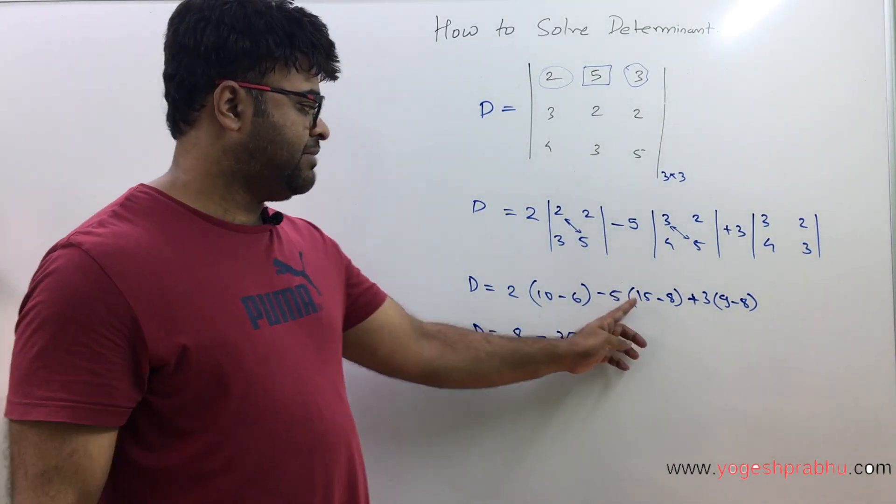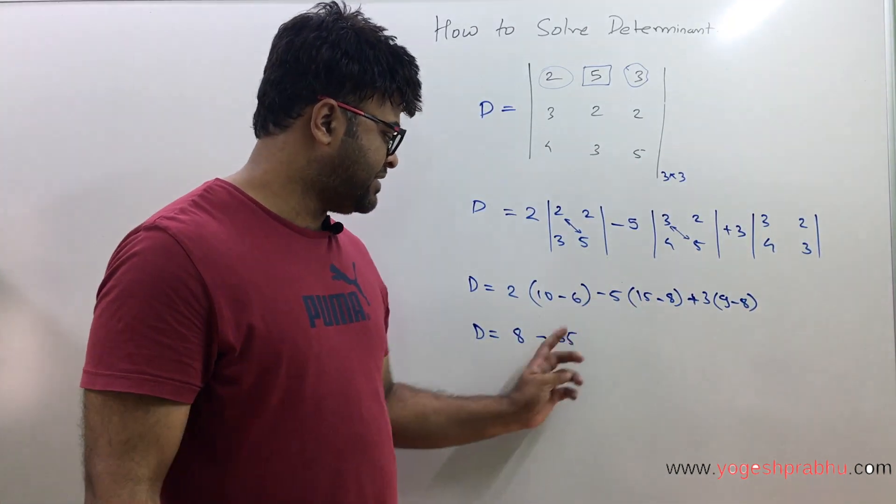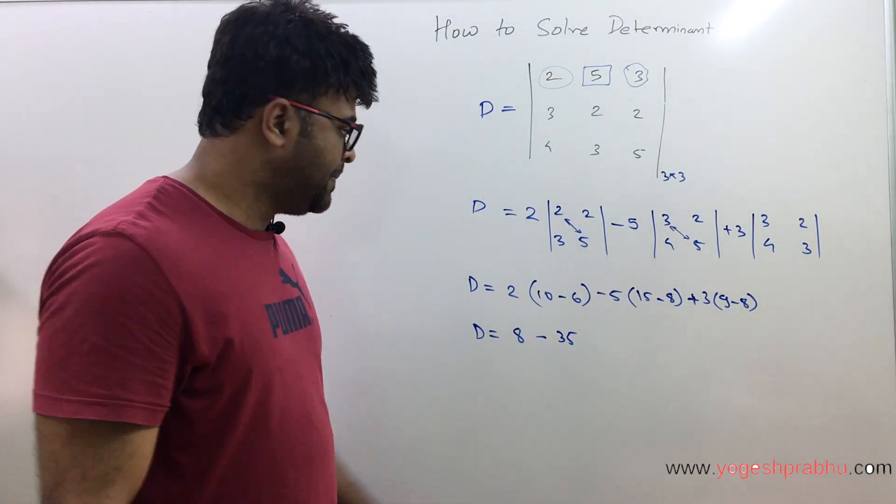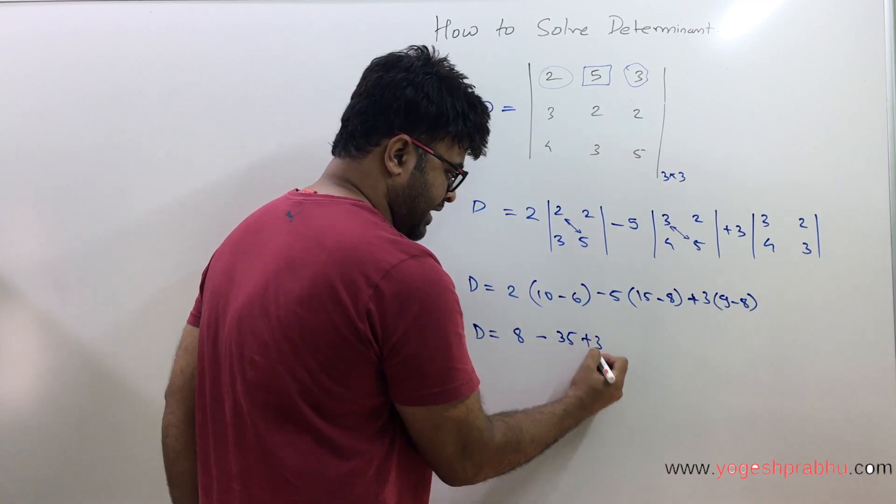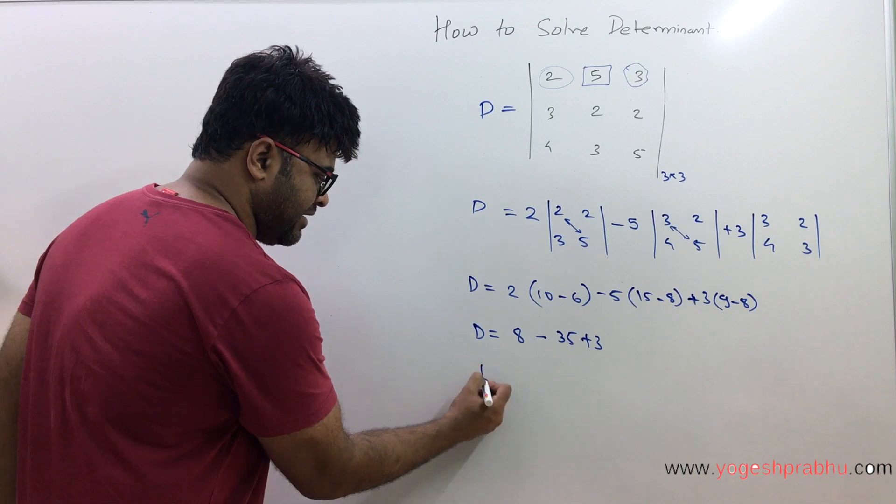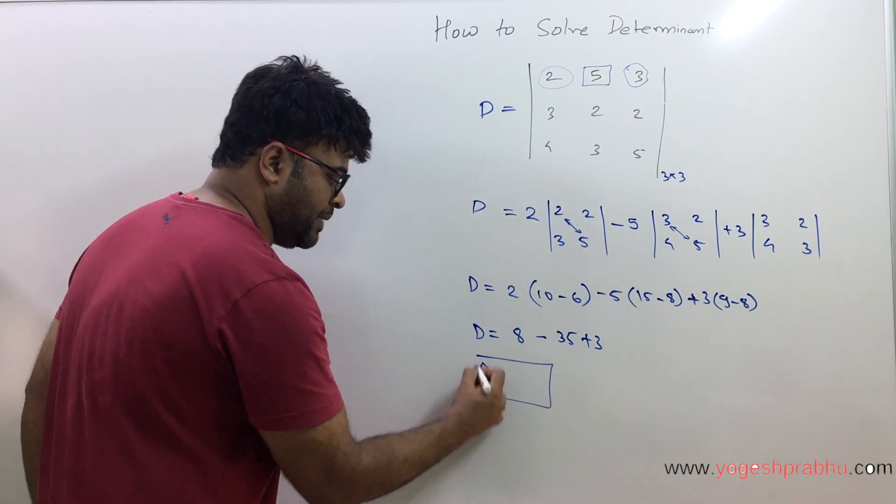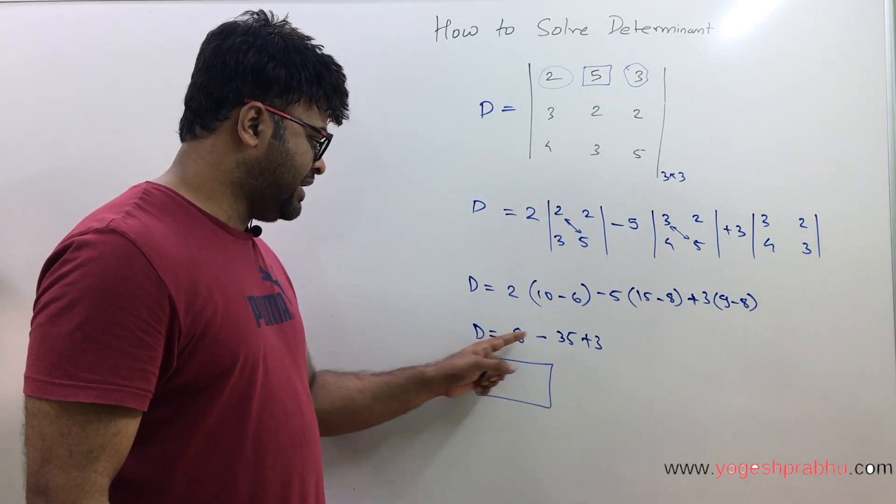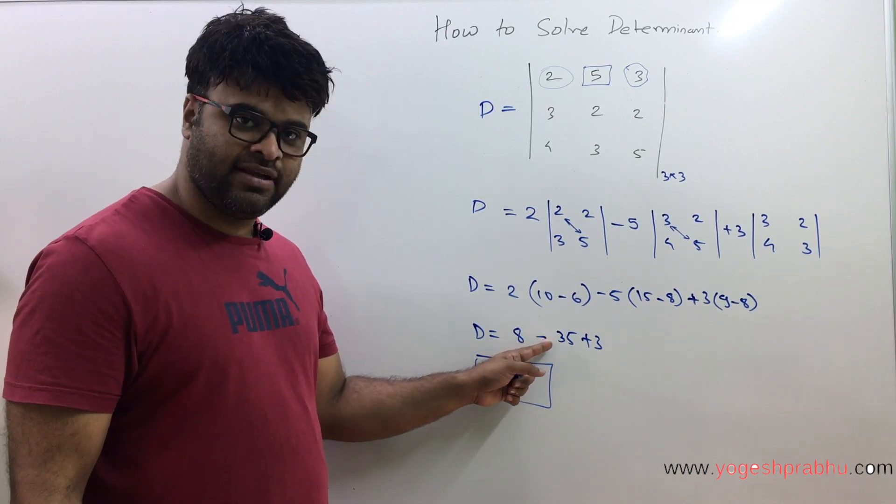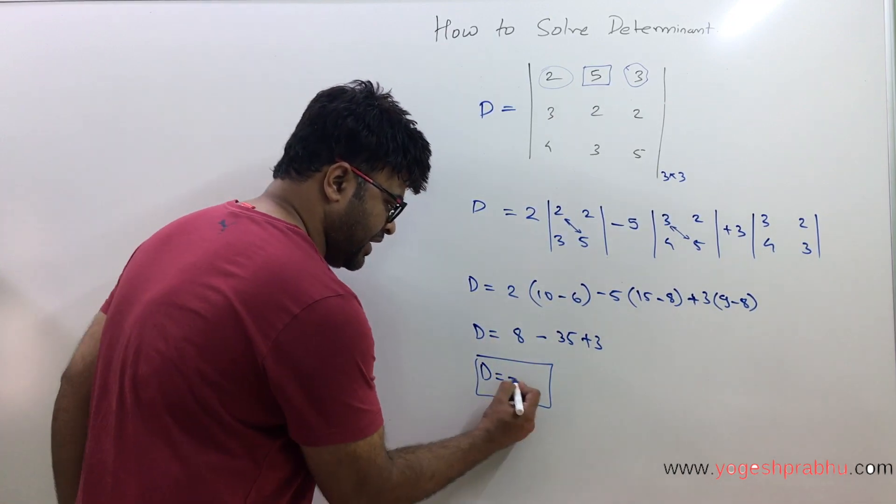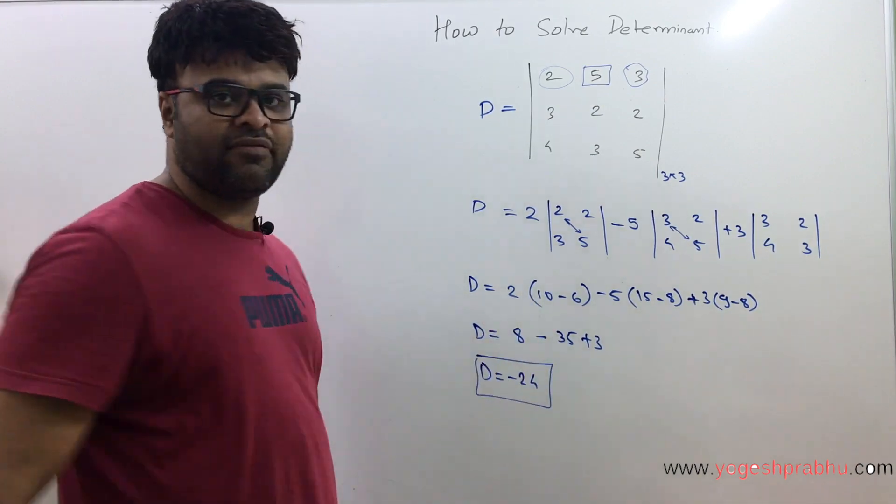Is that correct? 15 minus 8 is 7, then 7×5 is 35, and there is a minus sign over here. Then 9 minus 8 is 1, plus 3. Now D, the final answer of the determinant, is going to be this. Let us add these numbers here, so it's 8 minus 35, which is minus 27, and plus 3, that's minus 24. And that's how you solve a determinant.